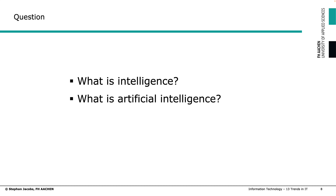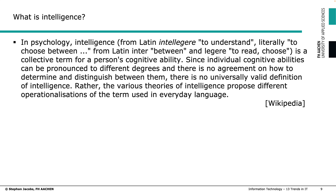So the first question of all is: what is, after all, intelligence? And what is artificial intelligence? You could stop the video here and first think about your own definition of intelligence. What is intelligence? What are signs of intelligent behavior? If you don't know, the first thing is to go to Wikipedia. Here you find a definition which goes back to psychology. Intelligence is a collective term which defines a person's cognitive ability. But what is cognitive ability?